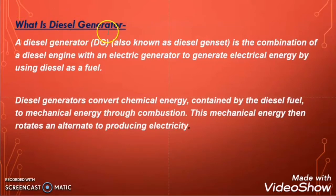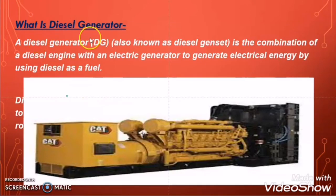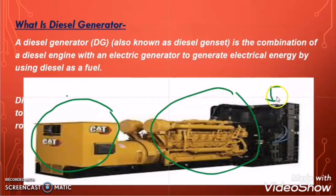So what is a diesel generator? A diesel generator, DG, also known as a diesel genset, is a combination of a diesel engine and an electrical generator to generate electrical energy by using diesel as a fuel. The diesel generator or DG or genset produces electricity by using diesel as a fuel.